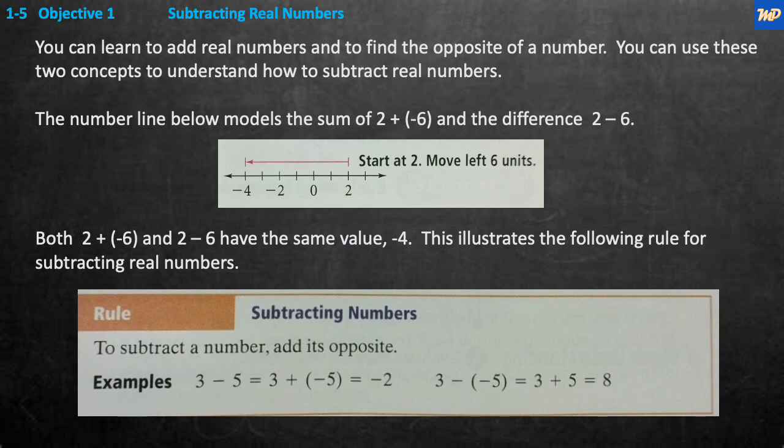Looking at Objective 1, Subtracting Real Numbers. It says you can learn to add real numbers and to find the opposite of a number. You can use these two concepts to understand how to subtract real numbers. The number line below models the sum of 2 plus negative 6 and the difference 2 minus 6.